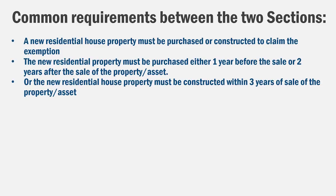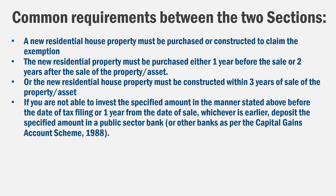If you haven't yet decided where to invest the capital gains but you still want the exemption, you can deposit that money in the Capital Gain Account Scheme at a public sector bank such as SBI or PNB. You must deposit this amount before 1 year after the property sale or before the due date of filing your return — whichever is earlier.